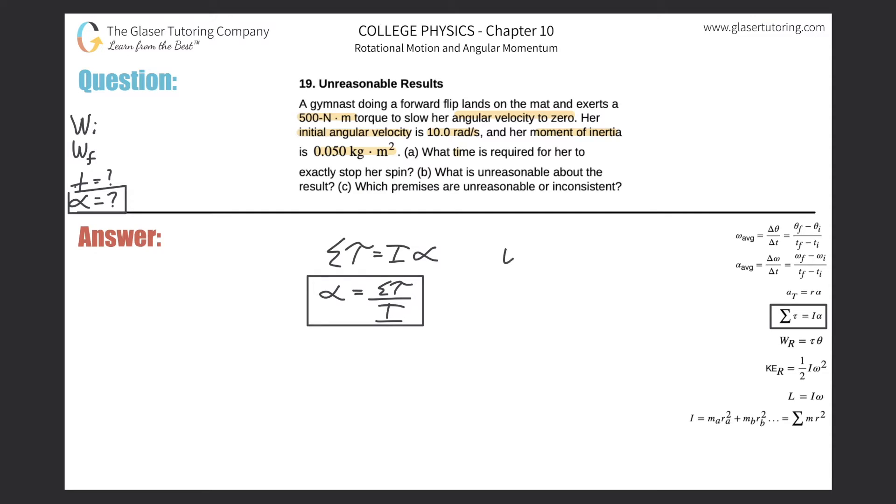You can think about the linear kinematic analogs. This is fairly straightforward: the final angular velocity is equal to the initial angular velocity plus the angular acceleration times time. That should look very similar to vf equals vi plus at.